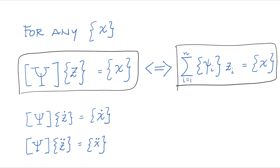So this sum goes from one to n. Again, these guys here are what we call modal coordinates.